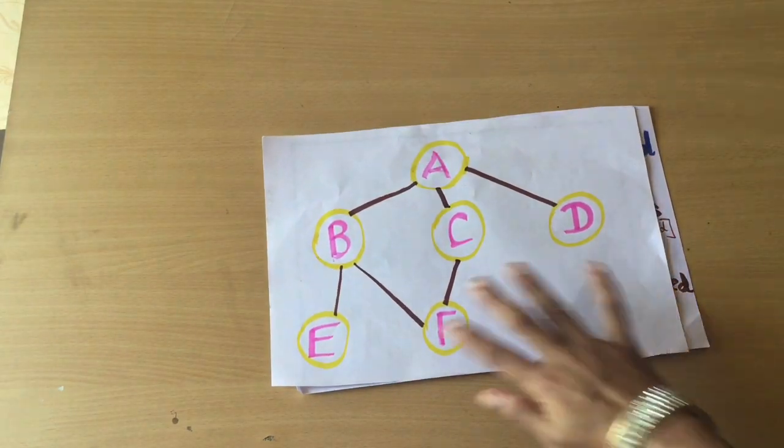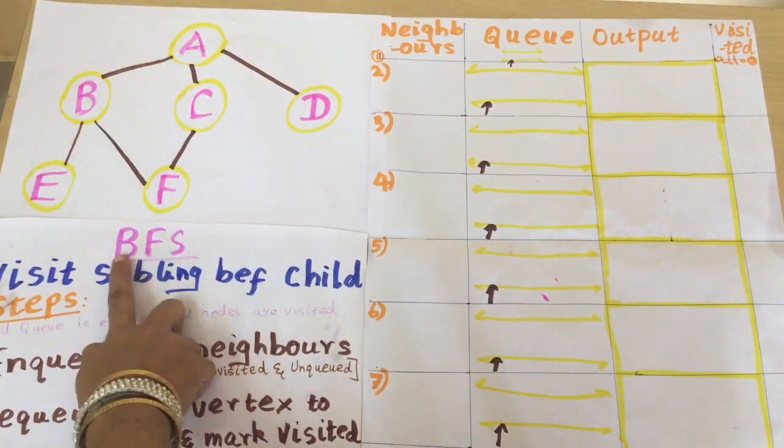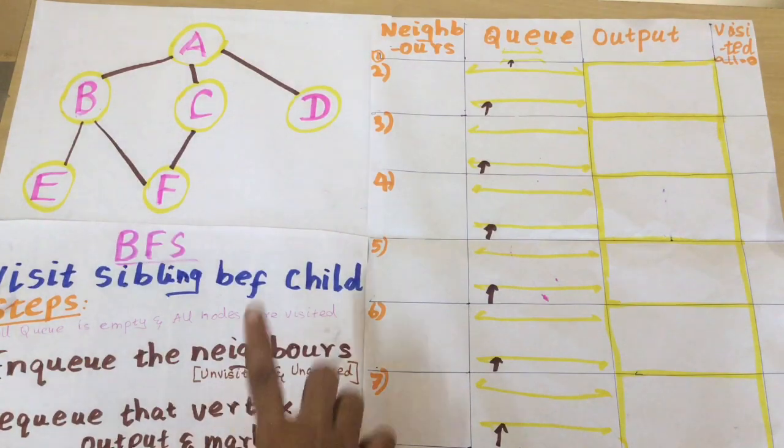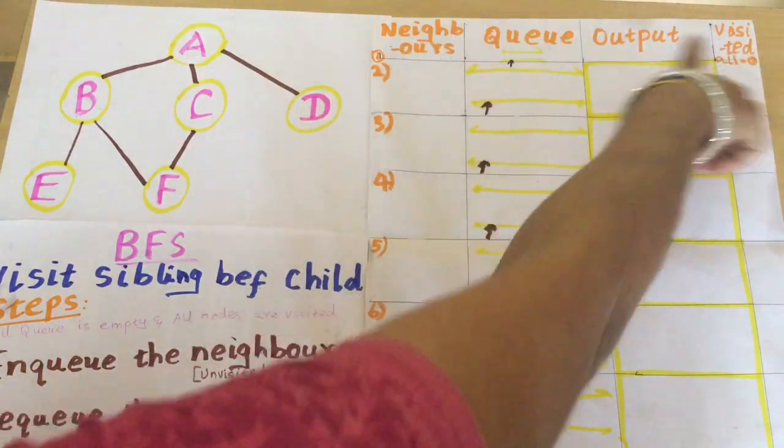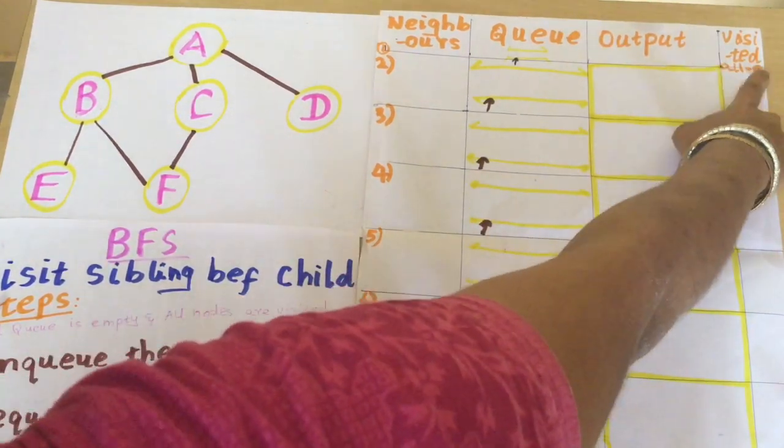This is an example graph. For this example graph we are going to perform BFS. You have to create a tabular column like this having neighbors, queue, output, and visited.